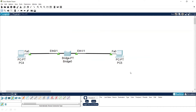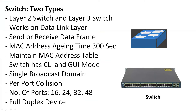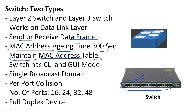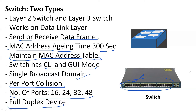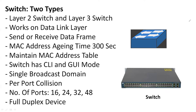The next internetworking device is the switch. A switch is a smart device that can send or receive data in the form of frames and has multiple ports — you can see 40 or 48 ports available. It also maintains a MAC address table, with an aging time of 300 seconds. It can work on both CLI and GUI modes. It has a single broadcast domain and per-port collision domain, making it full-duplex. Number of ports available are 16, 24, 32, or 48.